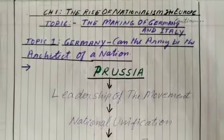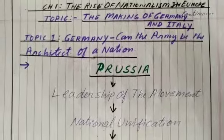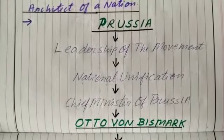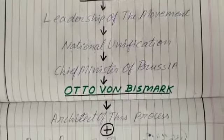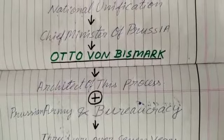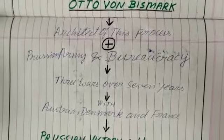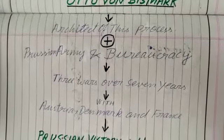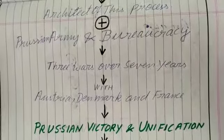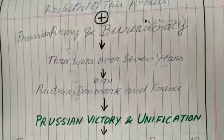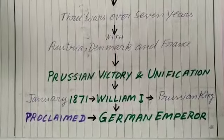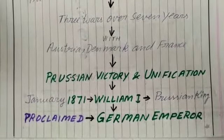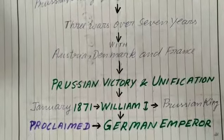From then onwards, Prussia took the leadership of the movement of national unification in Germany under the leadership of its prime minister, Otto von Bismarck. He was the chief architect of this process, carried out with the help of the Prussian army and bureaucracy. Three wars over seven years with Austria, Denmark, and France ended in Prussian victory and completed the process of unification. In January 1871, Prussian king William I was proclaimed German emperor in a ceremony held at Versailles.